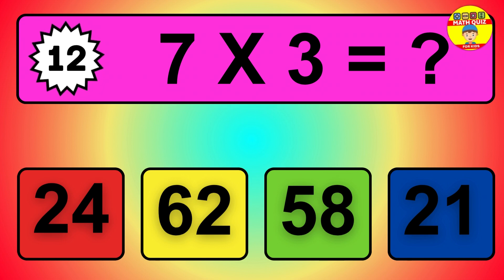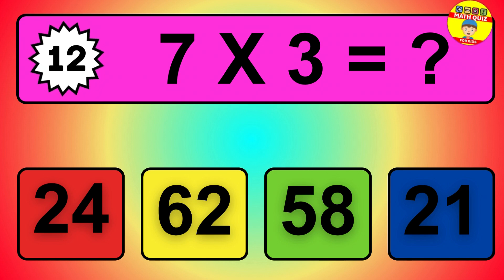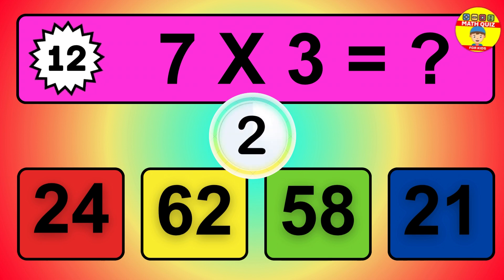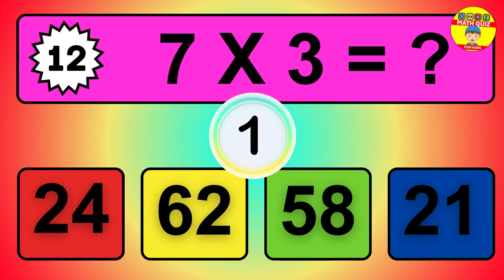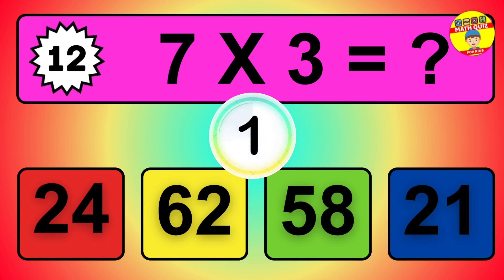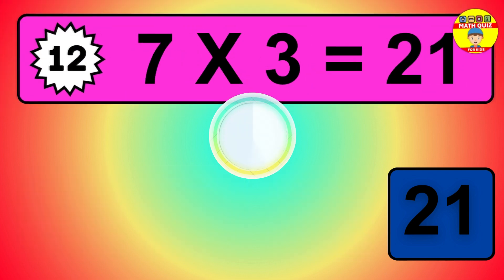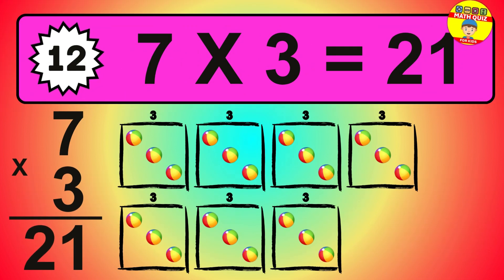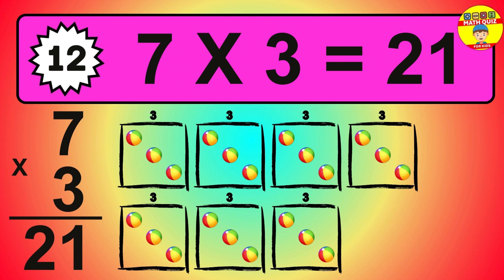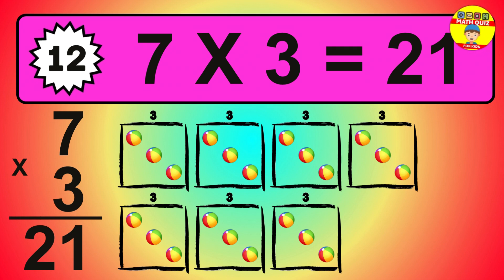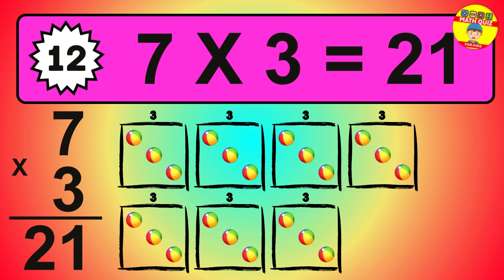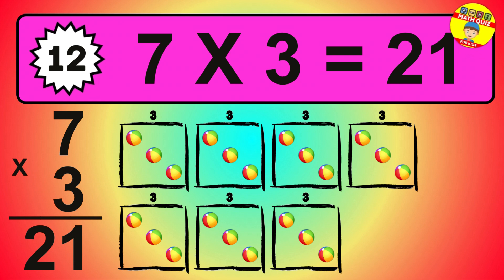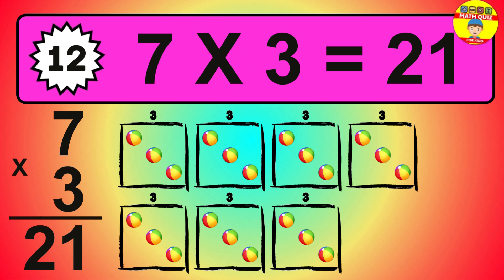Question 12. 7 times 3 equals what? The answer is 7 times 3 is 21. To calculate, we have 7 groups with 3 balls each one. So how many balls do we have? 21 balls.